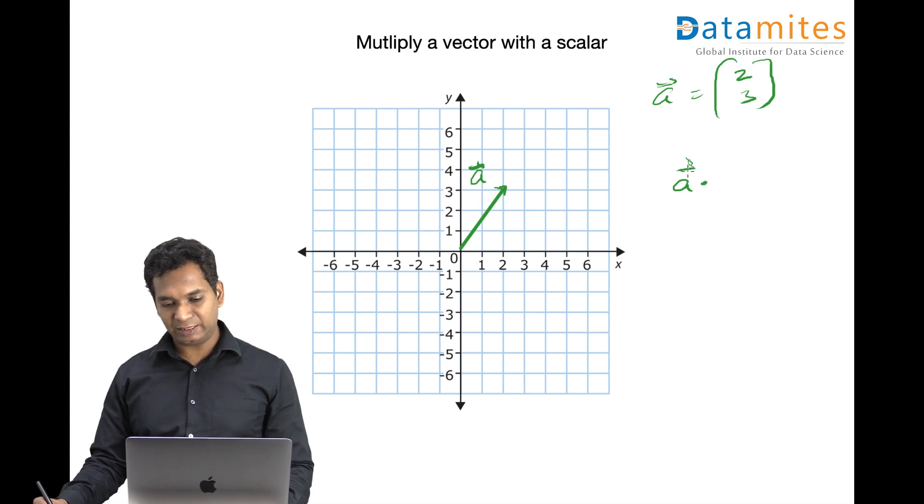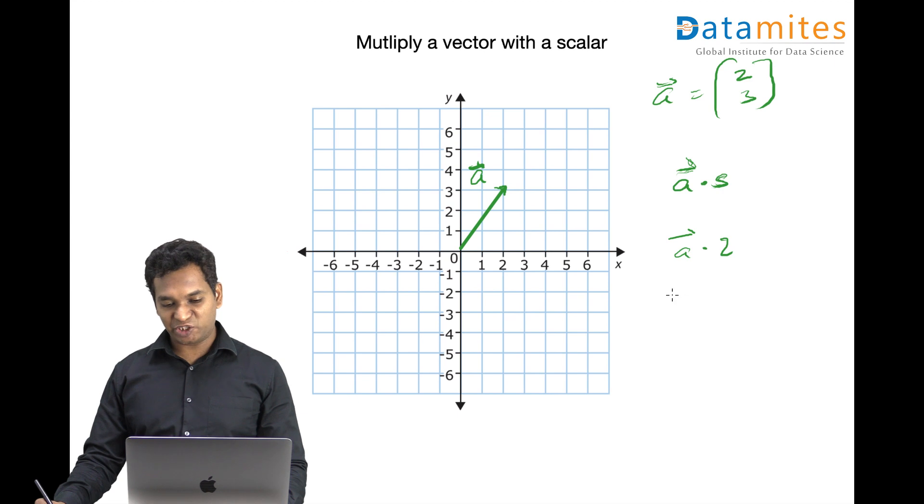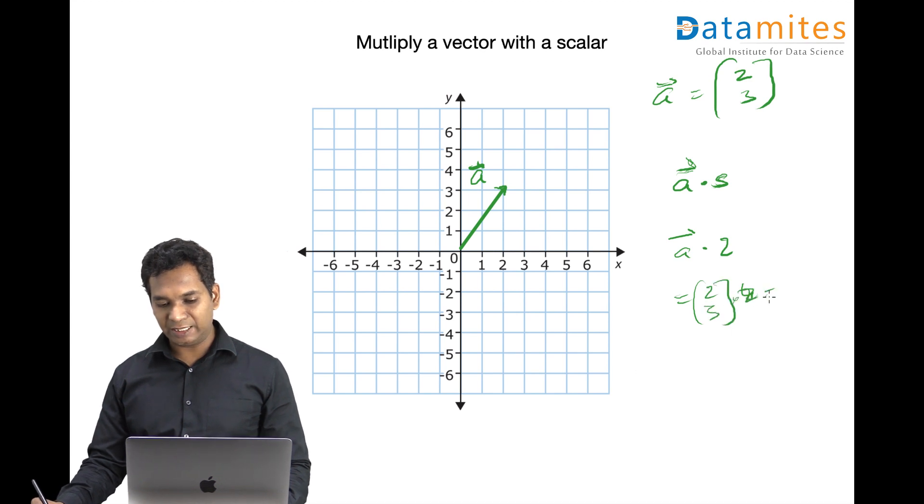Let's say a scalar is some value. Let s be 2. Then my multiplication will result in 2 by 2 into 3 into 2, which equals 4 comma 6.